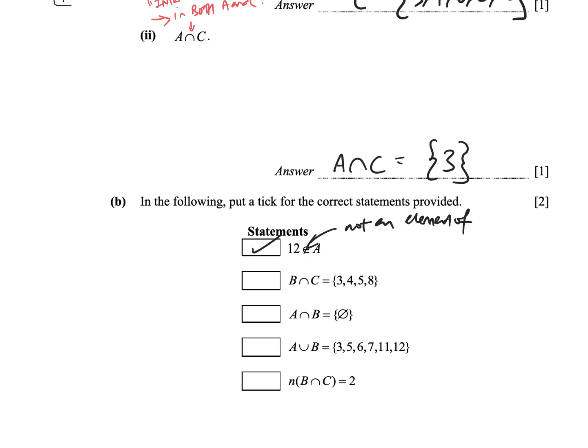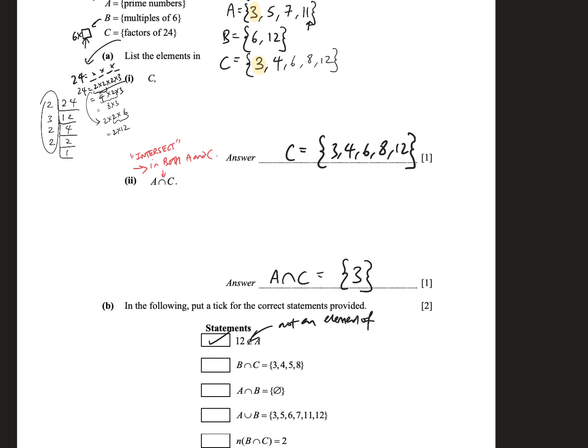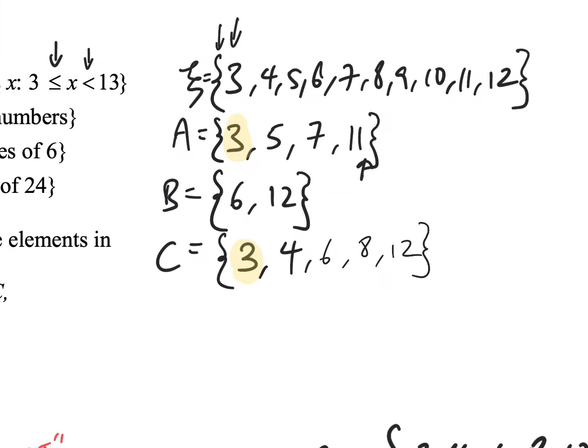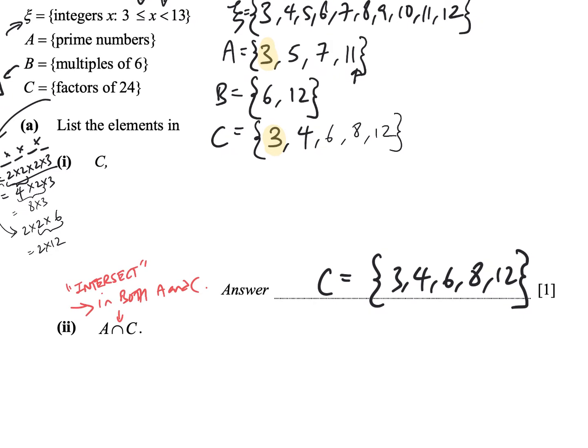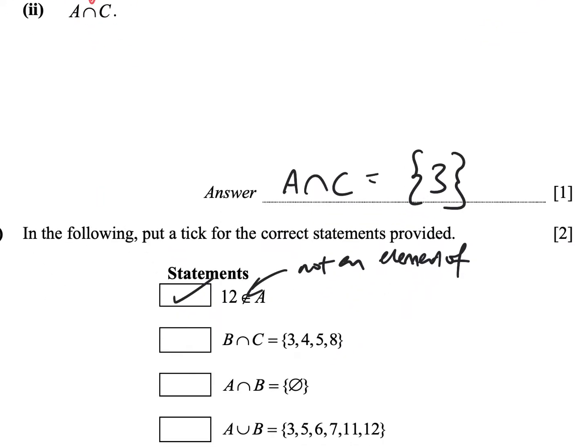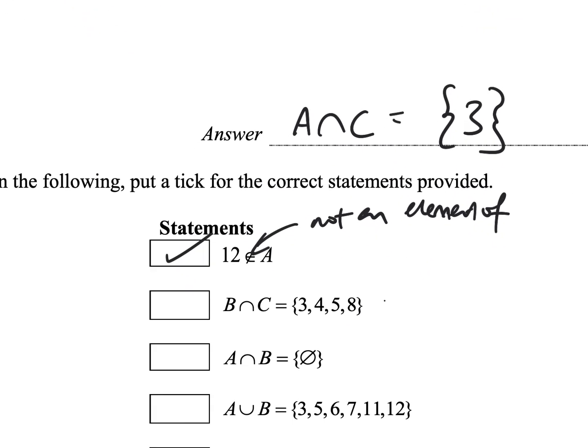B intersect C is 3, 4, 5, and 8. So, let's look. B and C. That means the elements must be in both B and C. Well, 3 is not even in B. So, this is automatically wrong. Because intersect means the elements must be in both B and C. So, this is definitely wrong because B doesn't even have 3 in it.